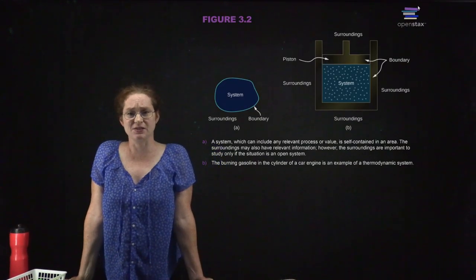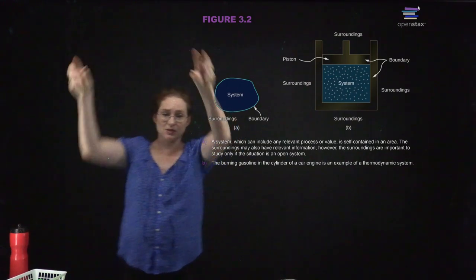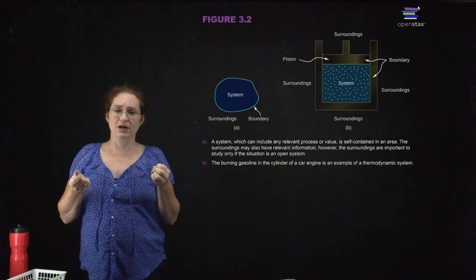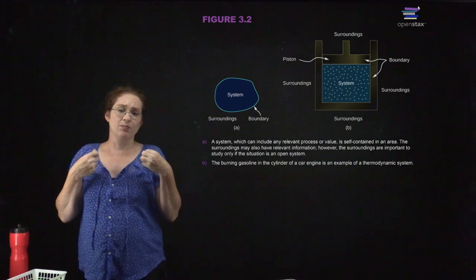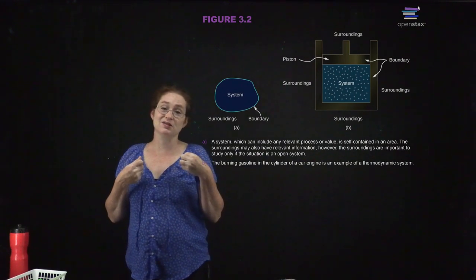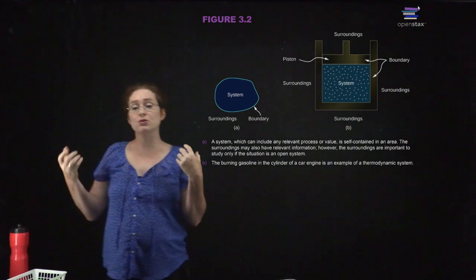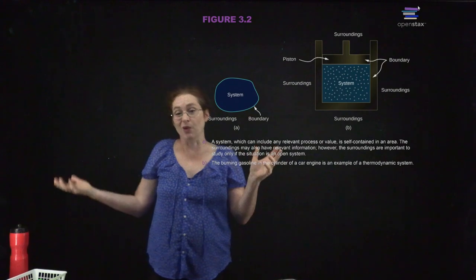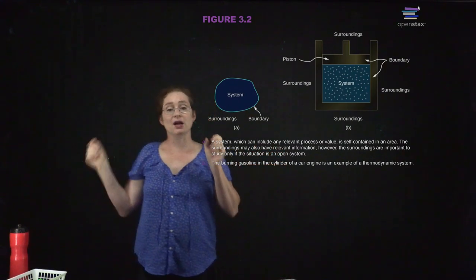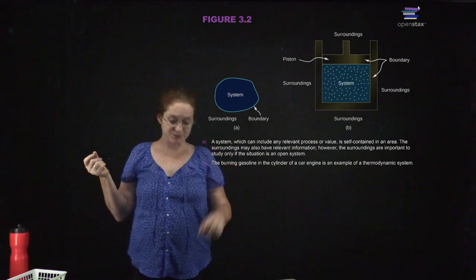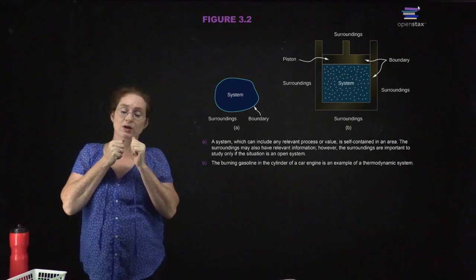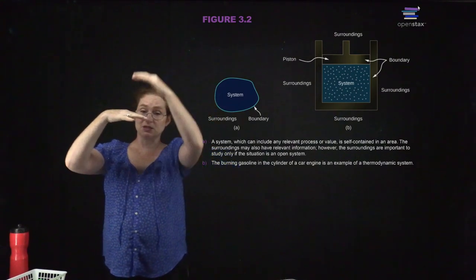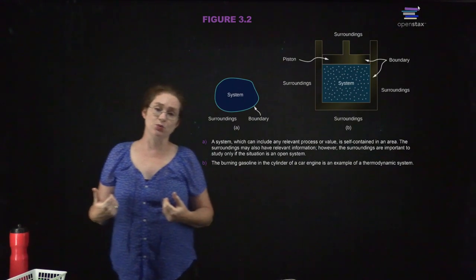We start by defining a system. We're going to draw a boundary around a system, and that's going to be a self-contained area. It can have surroundings, and that may be relevant, but we're only interested in the surroundings if the system is open. You can also talk about a closed system — in a closed system, you don't have energy or mass exchange with the outside world. There are almost no perfect closed systems, but many things approximate one. We're mostly going to define a system as not interacting with the outside world, or only interacting in a specific way, and see how that system exchanges energy with its surroundings.